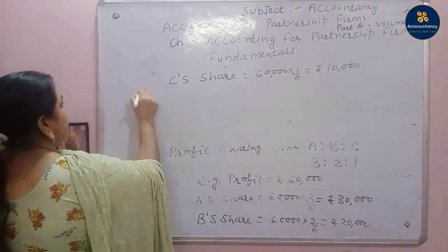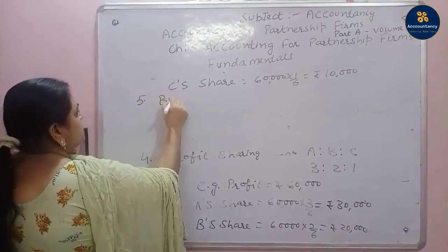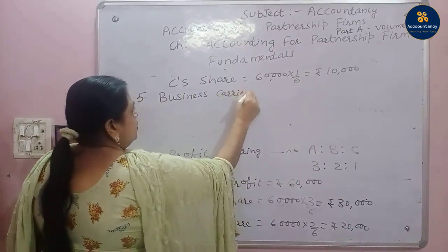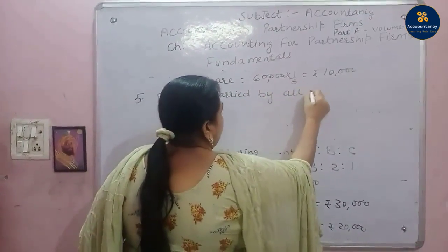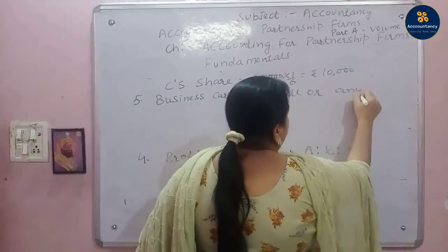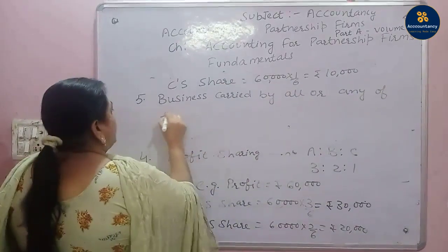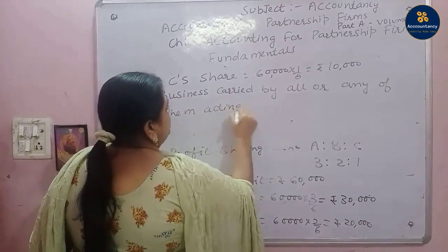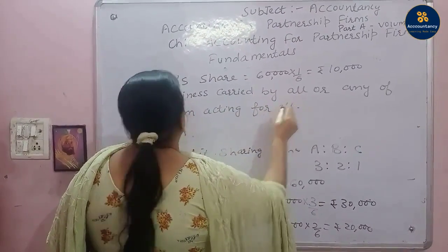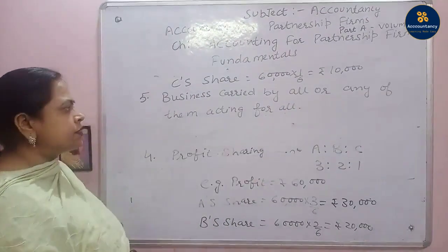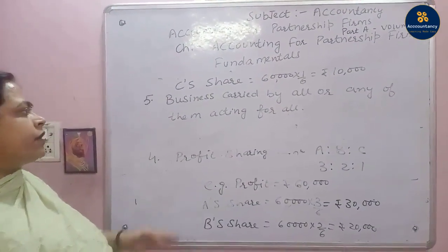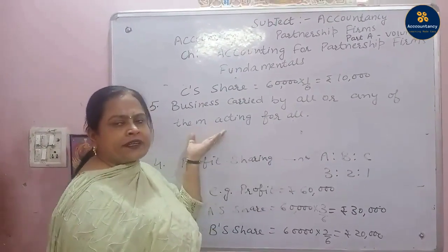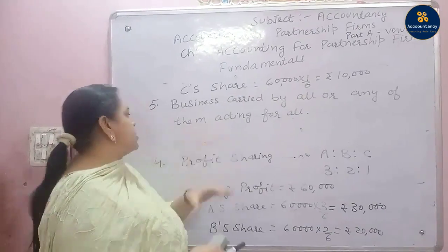The fifth feature is business carried on by all or any of them acting for all. This means some partners can take active participation in the conduct of the business while others may not.